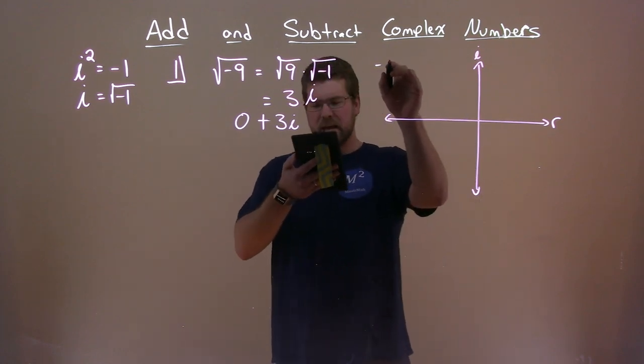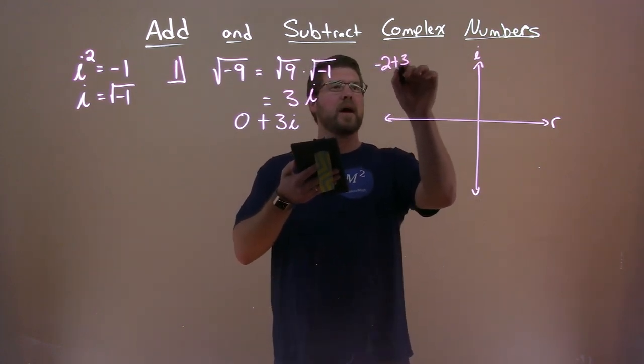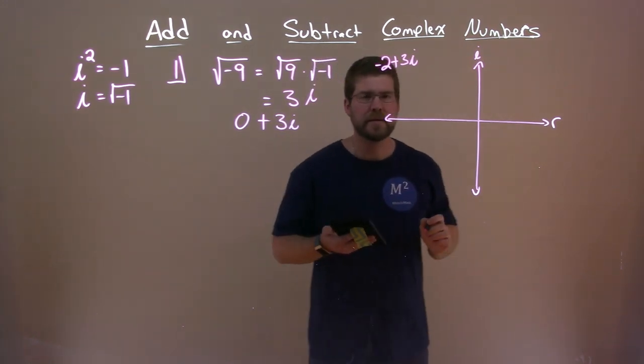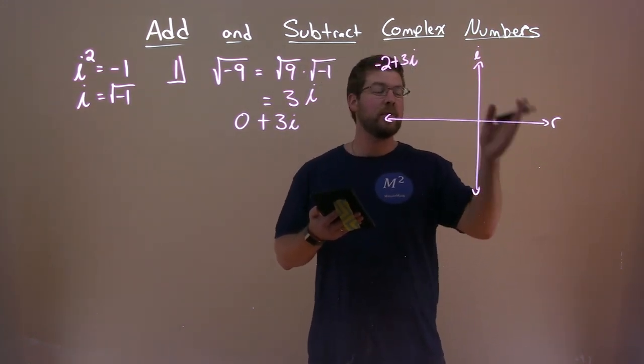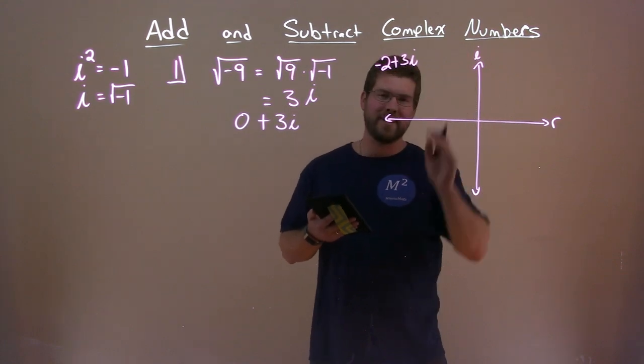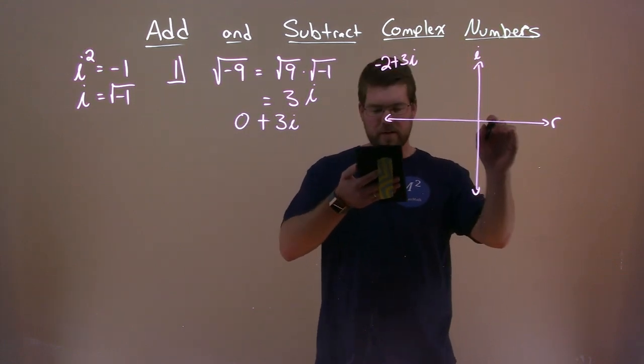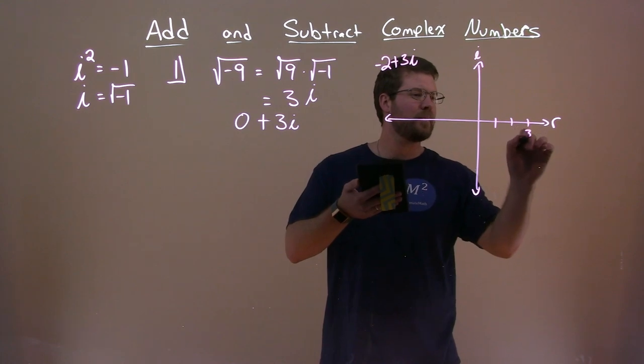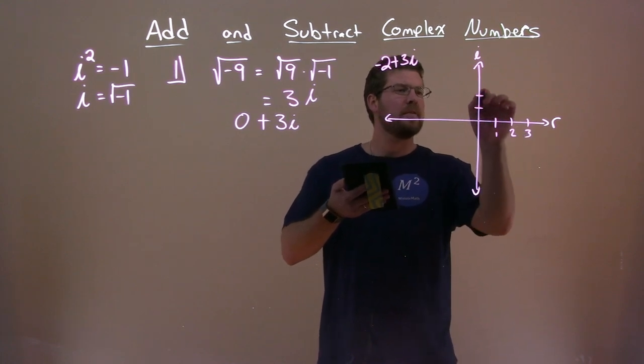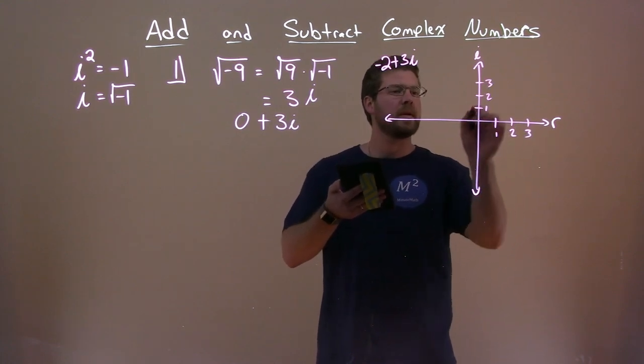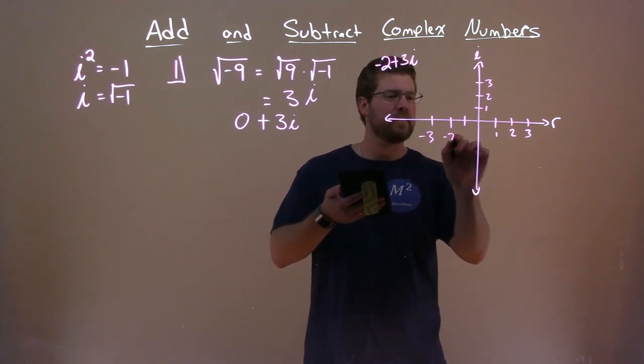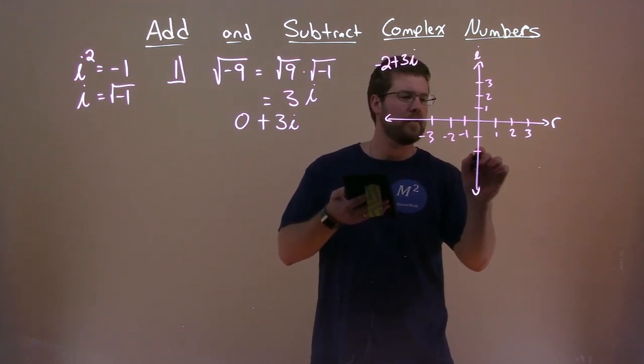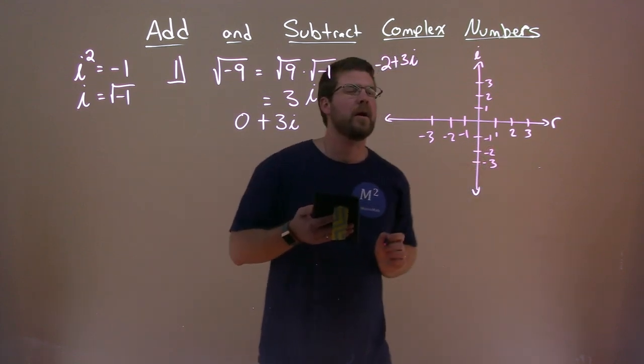So if we wanted to plot, let's say, negative 2 plus 3i here, we would plot it as part of a mix of the real plane, a real line, a real axis, and imaginary axis. So if we just had, quickly, 1, 2, 3, 1, 2, 3, 1, 2, 3, let's keep it easy, and 1, 2, 3.